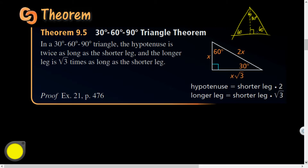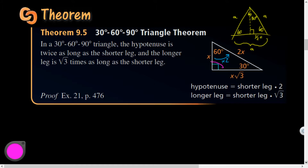In a 30-60-90 triangle, the hypotenuse is twice as long as the shorter leg. Looking at the equilateral triangle: the perpendicular bisector cuts the base side 'a' in half, so the short leg is a/2 and the hypotenuse is a. To go from the shortest leg to the hypotenuse, you double it — multiply by 2. And the longer leg is √3 times as long as the shorter leg — multiply by √3.